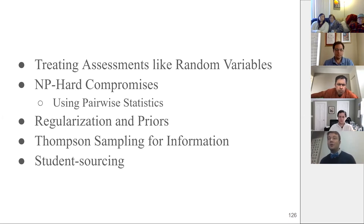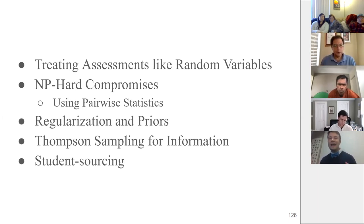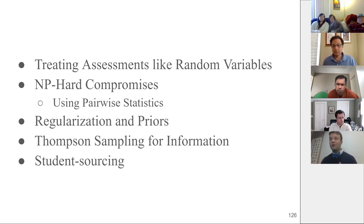Third, we've injected a lot of domain knowledge to keep the problem tractable: focusing on prerequisite and equivalence relationships, applying regularization with assumptions about small amounts of noise. We used Thompson Sampling to prioritize high-information questions — a fairly novel approach to a somewhat common objective. Information gain is an objective in many machine learning and reinforcement learning problems. Fourth, we used students in multiple ways: not only to generate questions, but also to group responses into equivalence classes to run our statistical process.